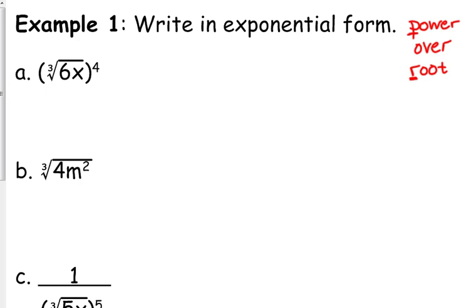So if we are writing the cube root of 6X raised to the fourth power in exponential form, we take that expression — the 6X has a power of 4 and it is the cube root — so that is 6X raised to the 4 over 3. When you see the 4 over 3 power, that means take the cube root of that expression raised to the fourth power.